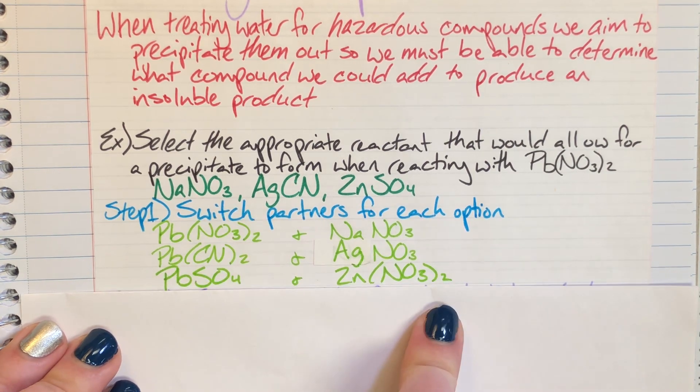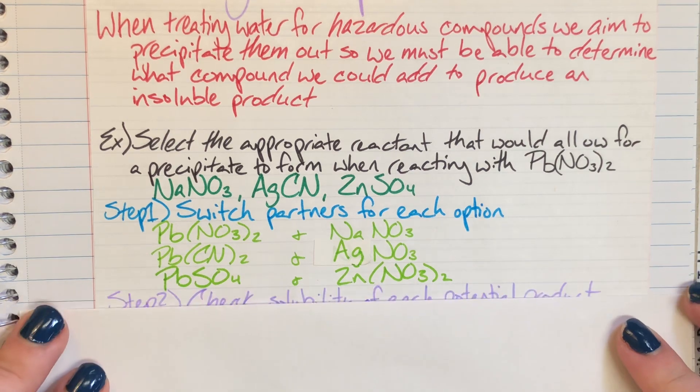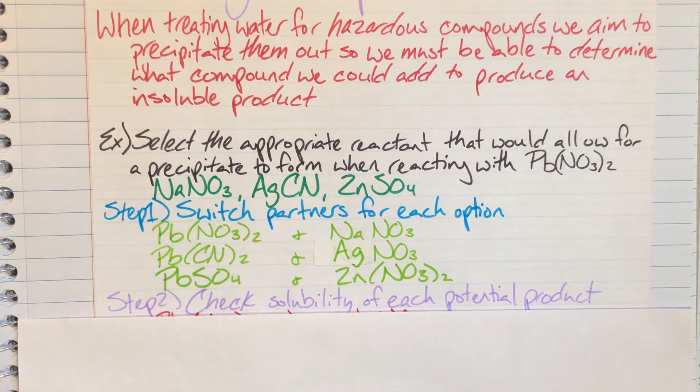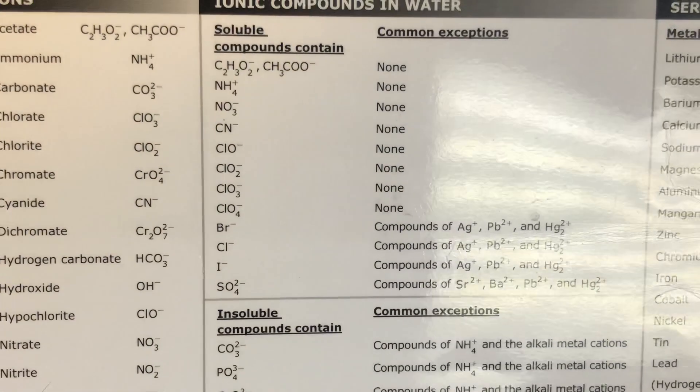Now that I have all of my options, what I'm going to do is check to see with each of the compounds' solubility if I could produce a precipitate or a solid product. So I'm going to check the solubility for lead(II) nitrate. Remember on the solubility chart we're going to be referencing based off of the anion.